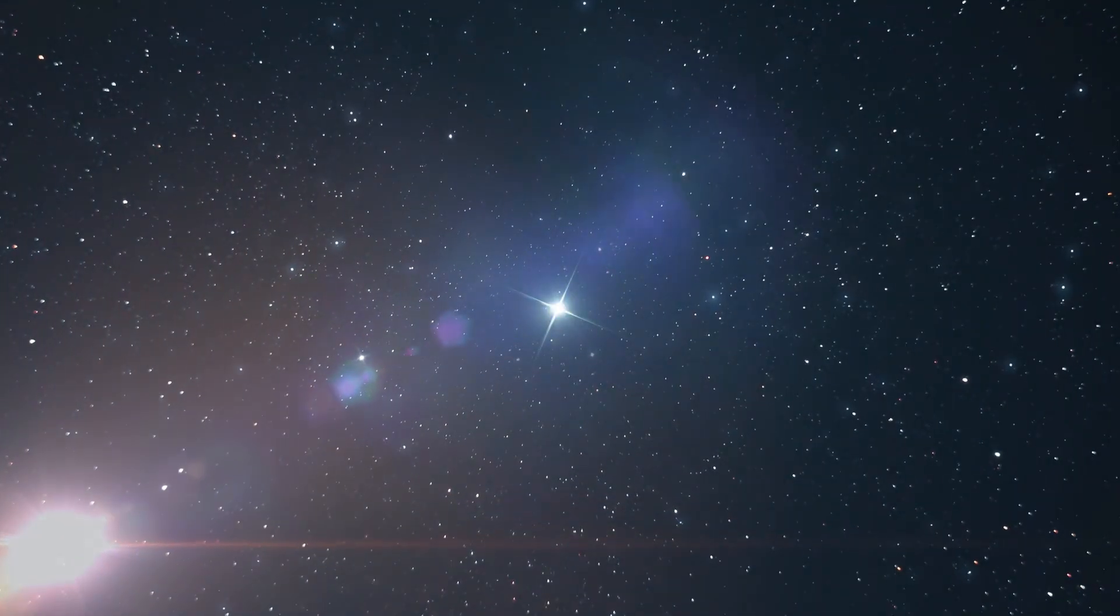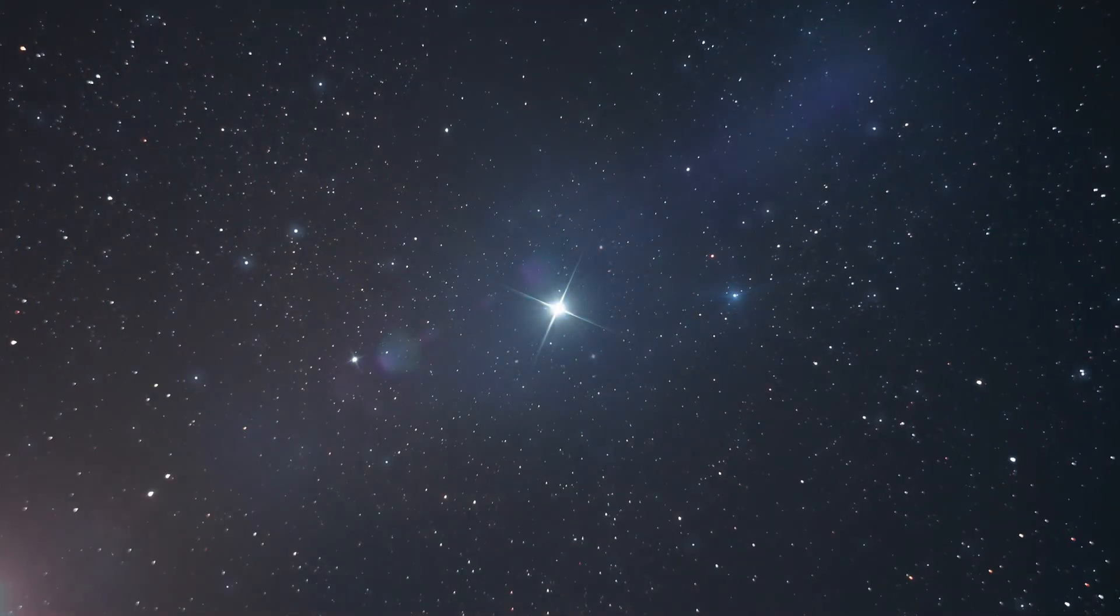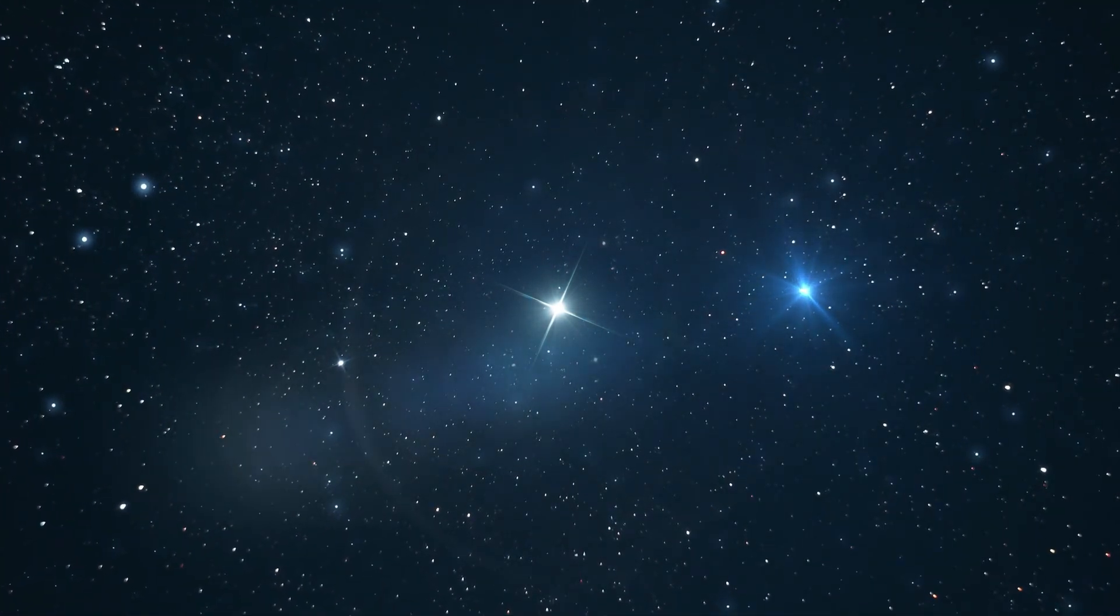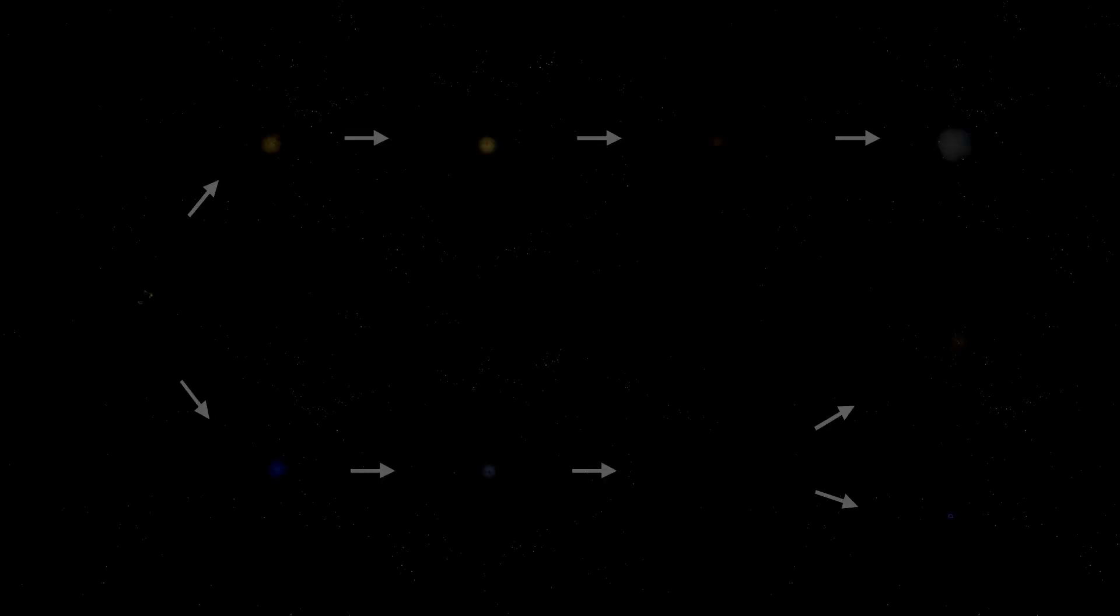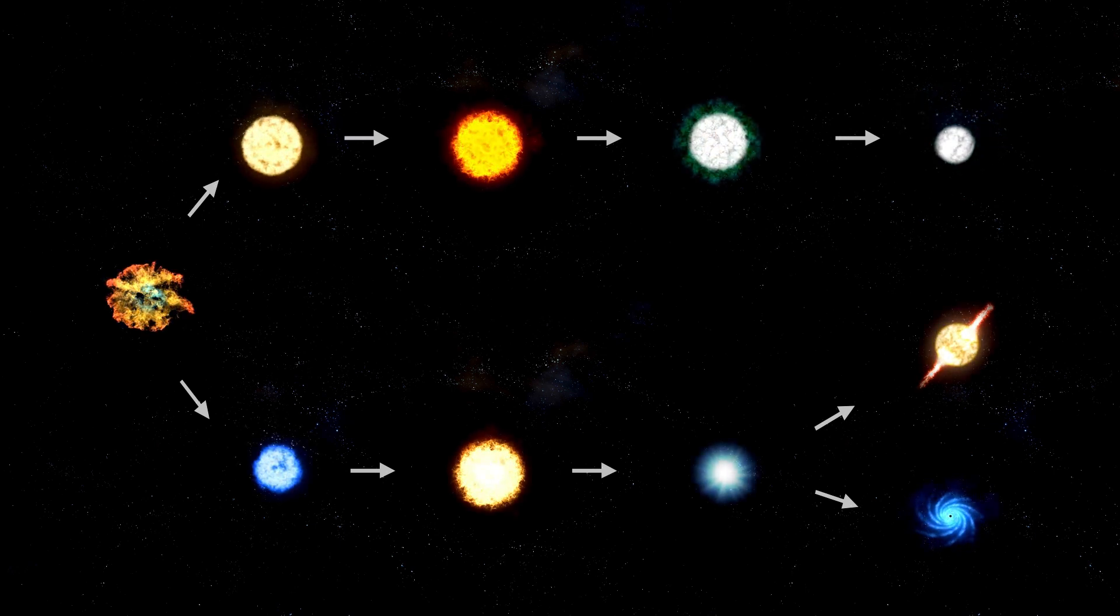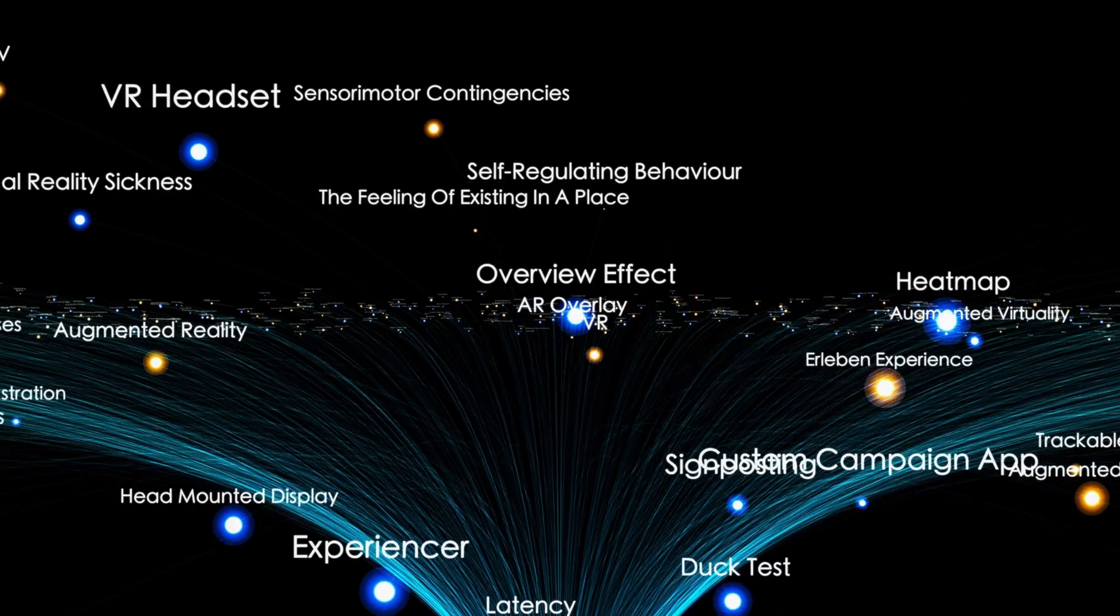If Betelgeuse went supernova centuries ago, the light from that explosion would be reaching us right around now. And when it does, it won't be subtle. The night sky will ignite, shadows will vanish, and for weeks it will shine like a second sun.